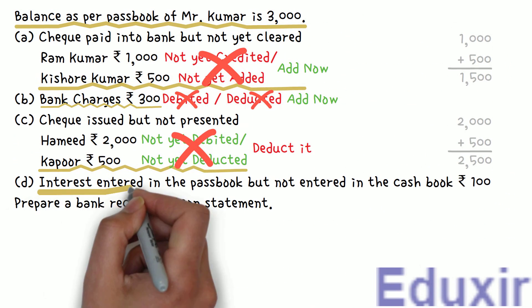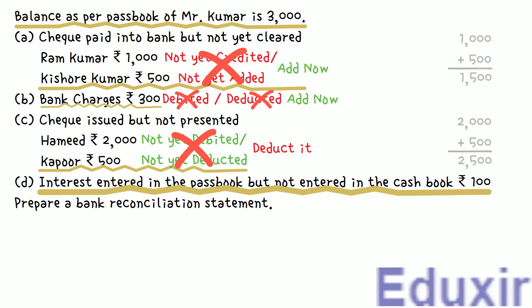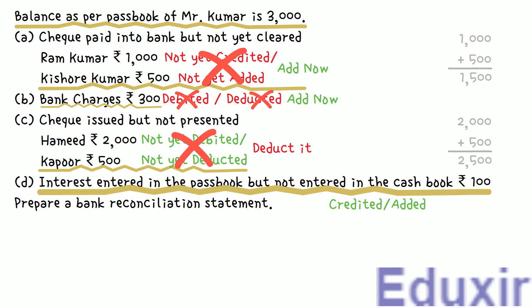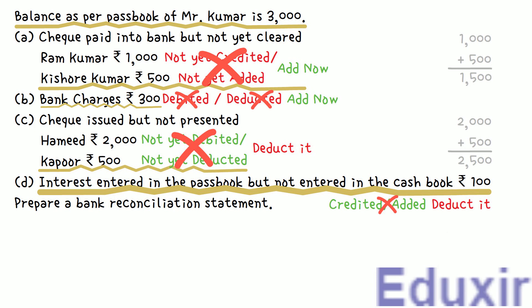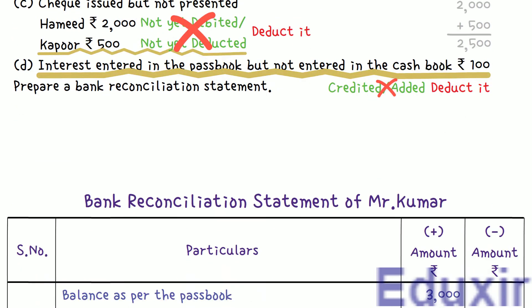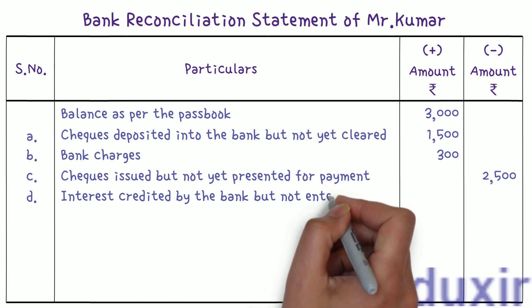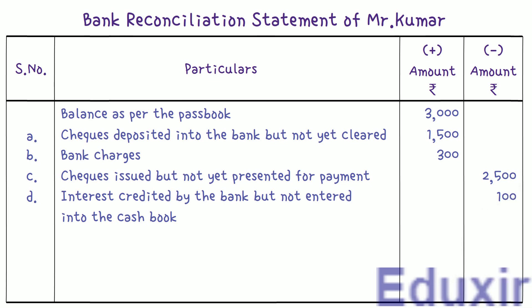The next detail: interest of Rs. 100 is entered in the passbook but not entered in the cashbook. The amount is credited in the passbook; however, as Mr. Kumar does not know about this interest until the bank statement is received, it will not be debited in the cashbook. So we need to deduct Rs. 100 from the passbook balance to get the cashbook balance. We enter the particulars as 'interest credited by the bank but not yet entered into the cashbook' and write Rs. 100 in the minus amount column.